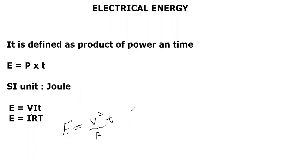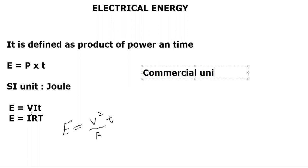There is one more thing related to electrical energy — the commercial unit of energy. The commercial unit is something used in our day-to-day life when we consume electricity. The commercial unit of electric energy used in our homes is kWh — kilowatt-hour.